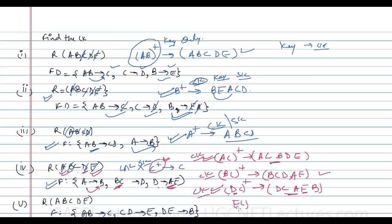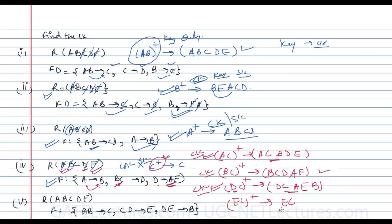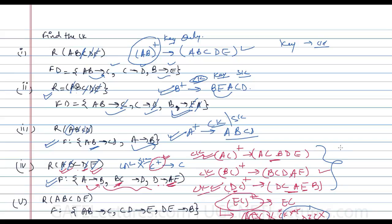Trying EC closure: E identifies itself and C identifies itself, but we cannot identify anything else, so EC cannot be a key. If we add attributes to EC — say AEC, BEC, or DEC — they still won't be candidate keys, because we can already identify everything with the smaller set AC alone. Those larger sets are not minimal.